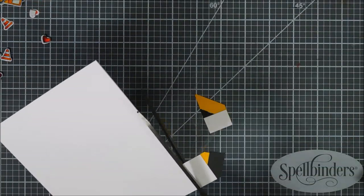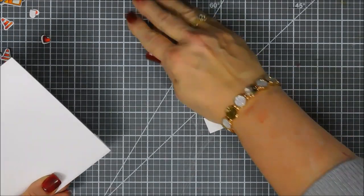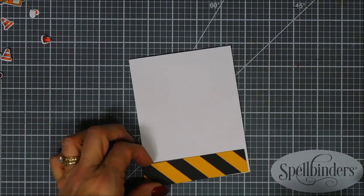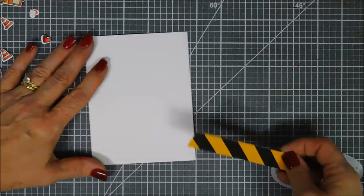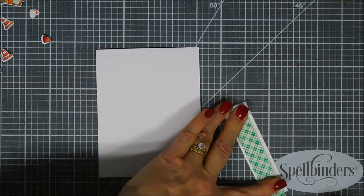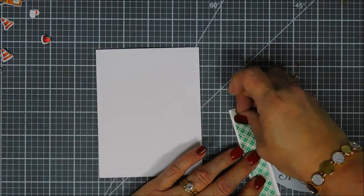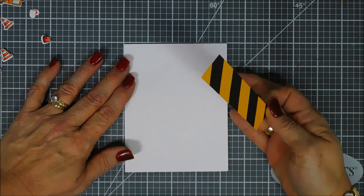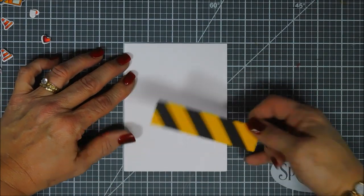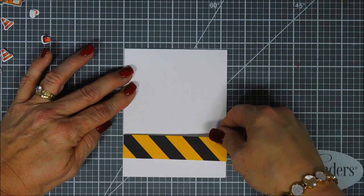Okay, I trimmed down my strip to a four and a quarter inch wide strip. We're going to add foam adhesive behind this strip of paper and then adhere this to the very bottom directly on our card front. Our card base today is four and a quarter by five and a half inches tall - it's a standard A2 size card base.